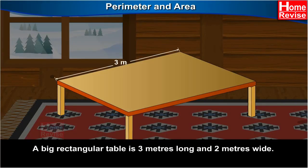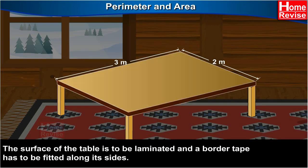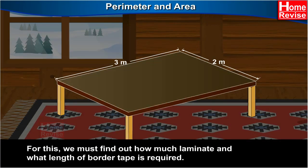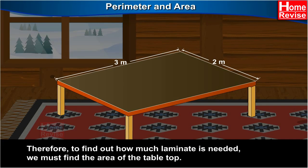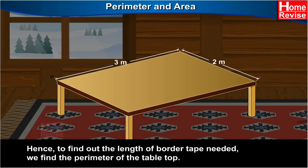A big rectangular table is 3 meters long and 2 meters wide. The surface of the table is to be laminated and a border tape has to be fitted along its sides. For this, we must find how much laminate and what length of border tape is required. The laminate will occupy the top surface of the table. Therefore, to find out how much laminate is needed, we must find the area of the table top. The border tape will be fitted along the sides of the surface. Hence, to find out the length of border tape needed, we find the perimeter of the table top.